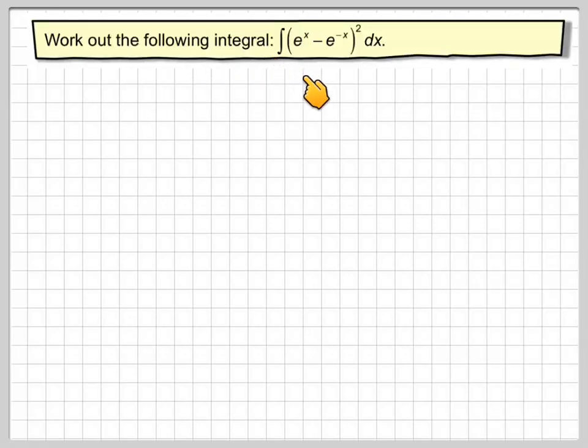Work out the following integral: the integral of e to the x minus e to the minus x all squared dx. So that means before we do this we need to square this.